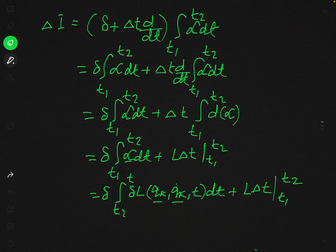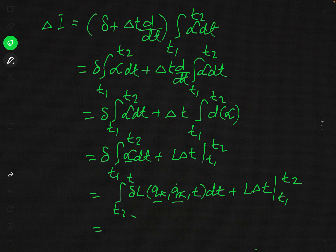Taking delta t equal to zero, our result is: delta I equals integral from t1 to t2 of summation over k of [(del L / del q_k) delta q_k plus (del L / del q_k dot) delta q_k dot] dt, plus L capital delta T at limits t1 and t2.